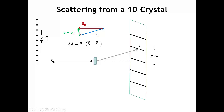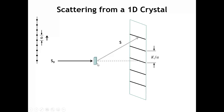The part that matters is the vertical projection of this green vector. The vertical component is multiplied by the length of the lattice constant, giving H lambda. That vertical direction of the green vector is the distance upward from the H equals 0 line to the H equals 1 line. We can call that distance K over A, where A is our unit cell vector and K is a constant that depends on the details of the experiment. Now, if we look at the second-order diffraction line, that's where we have the Laue equation with H equal to 2.